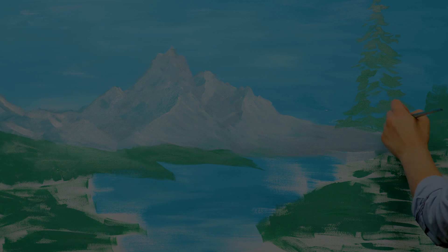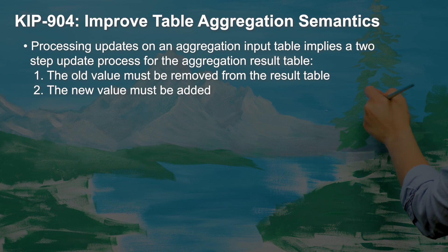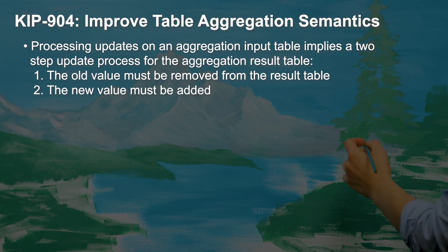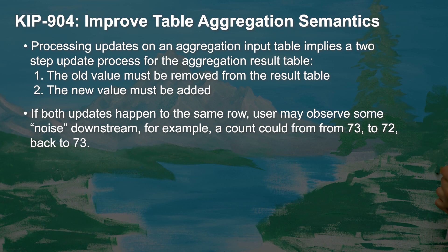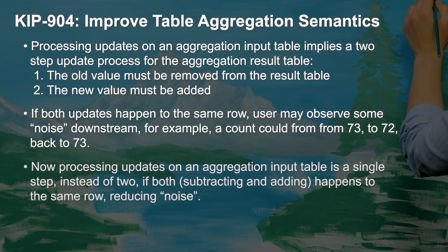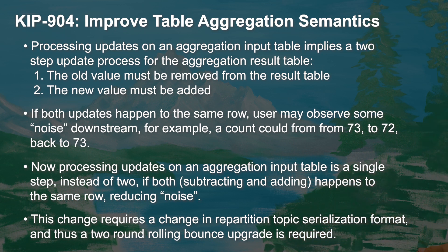Our final Kafka Streams KIP is KIP 904, which affects table aggregation semantics. Whenever you aggregate a table and conduct a group by, events are sent to an internal repartition topic. Since you could potentially change the grouping key within the aggregation group by, two events are sent downstream to processor nodes — one event with the old key and old value, and another with a new key and new value. These events can then be subtracted from or added to the corresponding aggregate associated with the old and new keys respectively. Sometimes the key doesn't change, and sending two events downstream creates an unnecessary amount of noise.